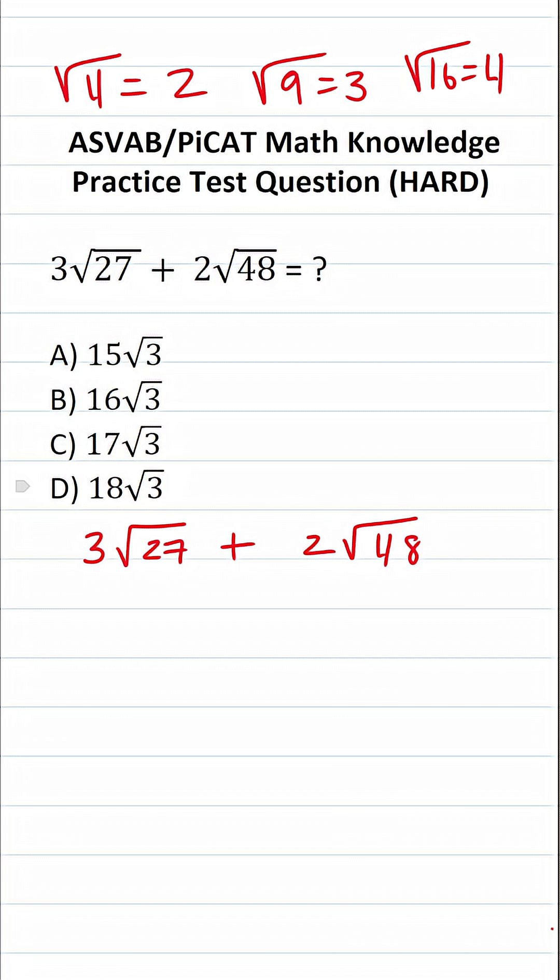And why do you need to know that? Because we're going to break down the square root of 27 using perfect squares. And likewise, I'm going to break down the square root of 48 using perfect squares to make this much easier to do. In fact, I can rewrite this as 3 times the square root of 27 plus 2 times the square root of 48. This makes it much easier to read.